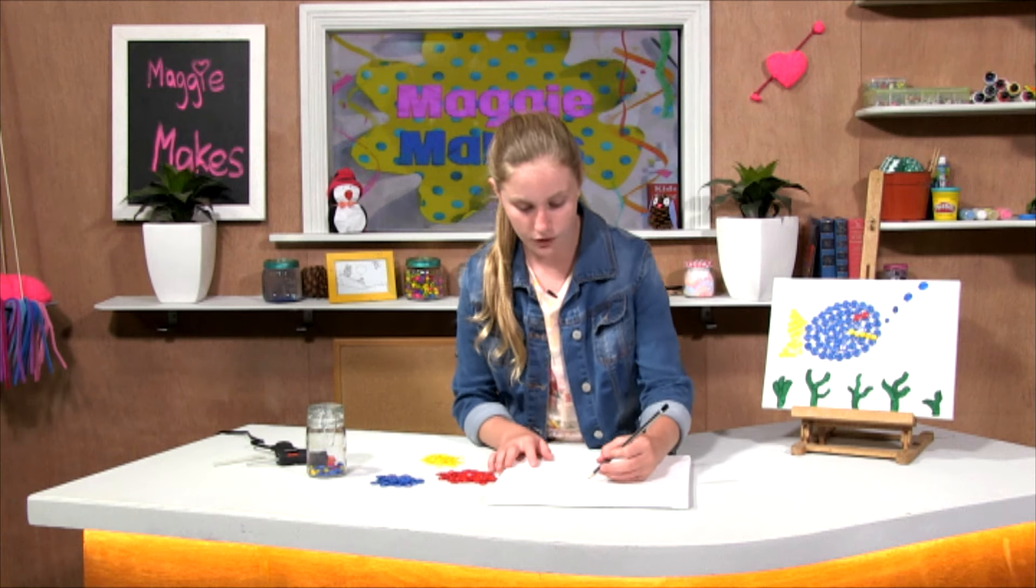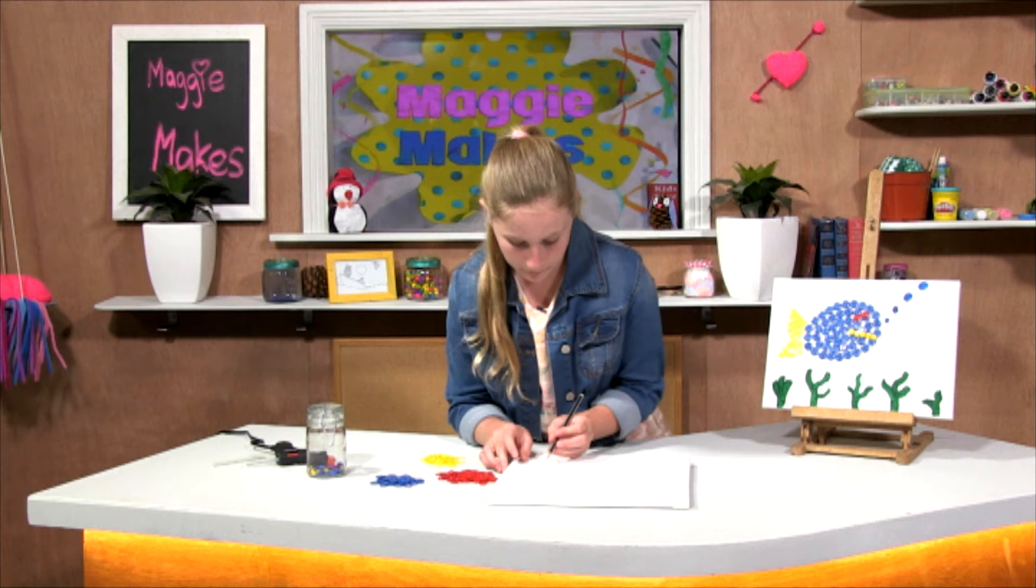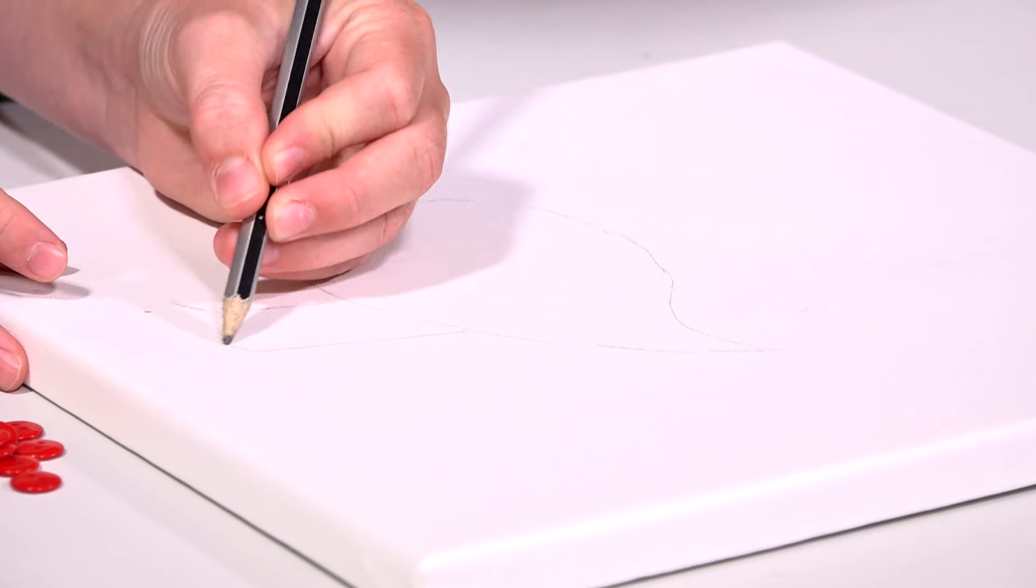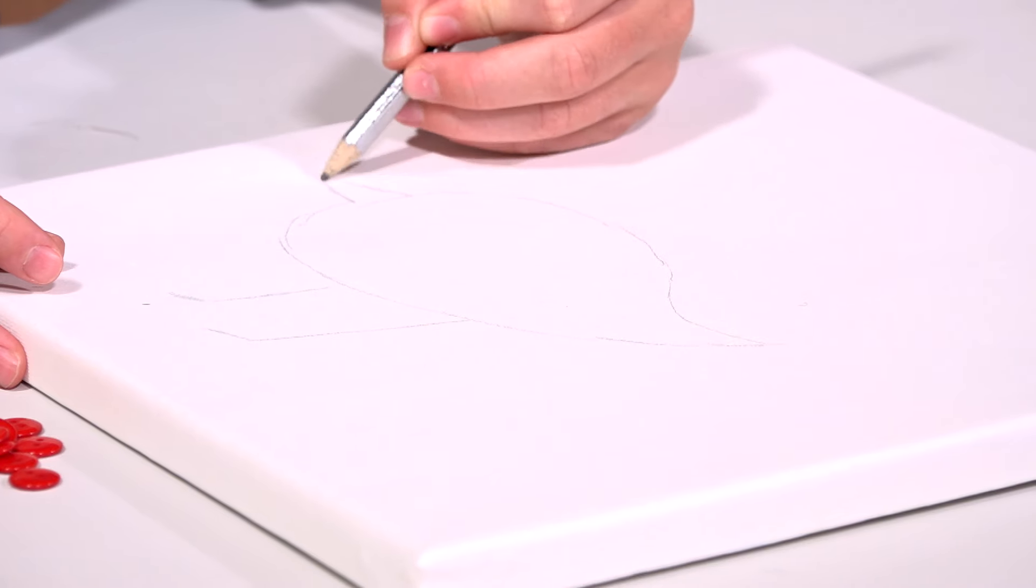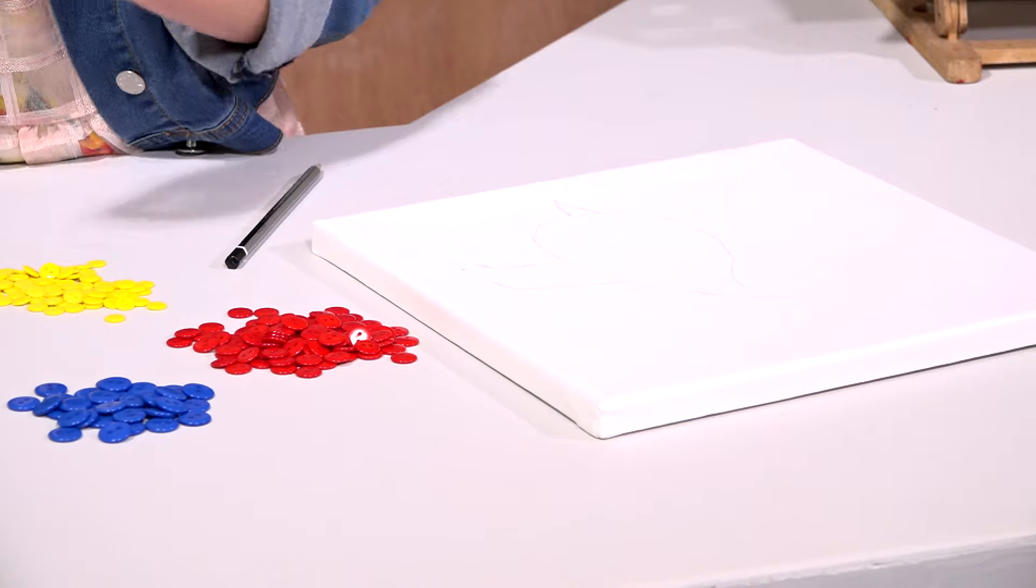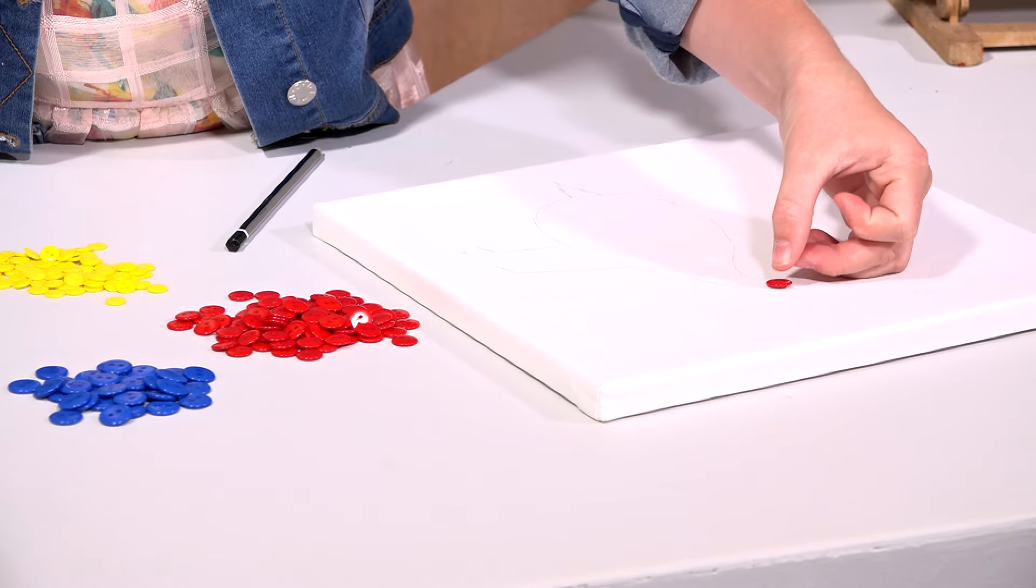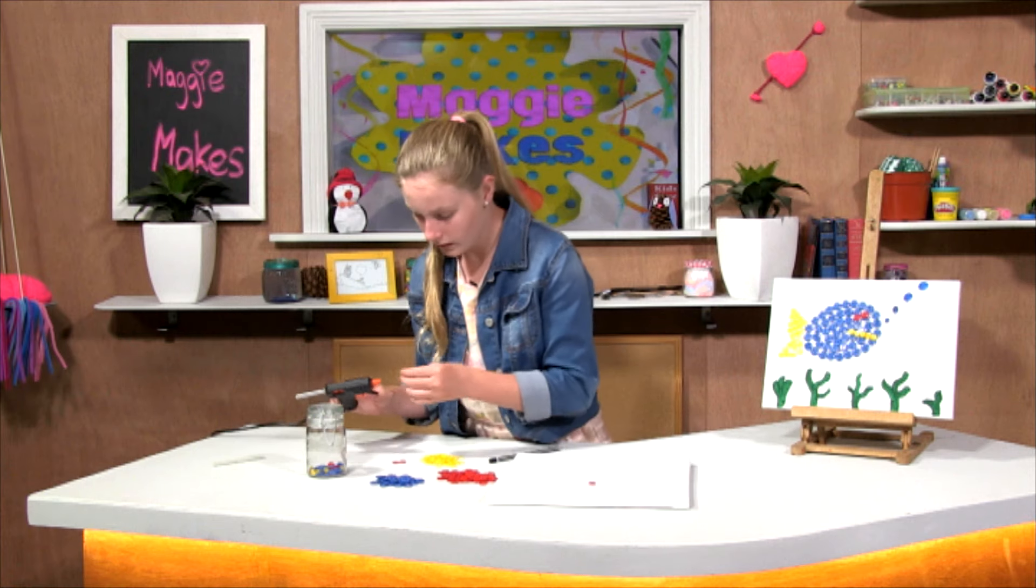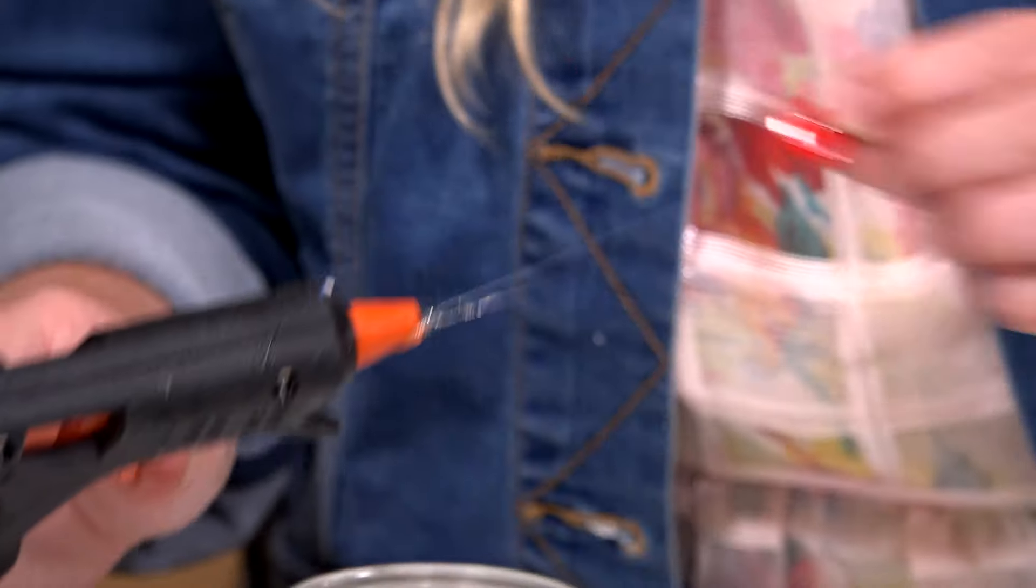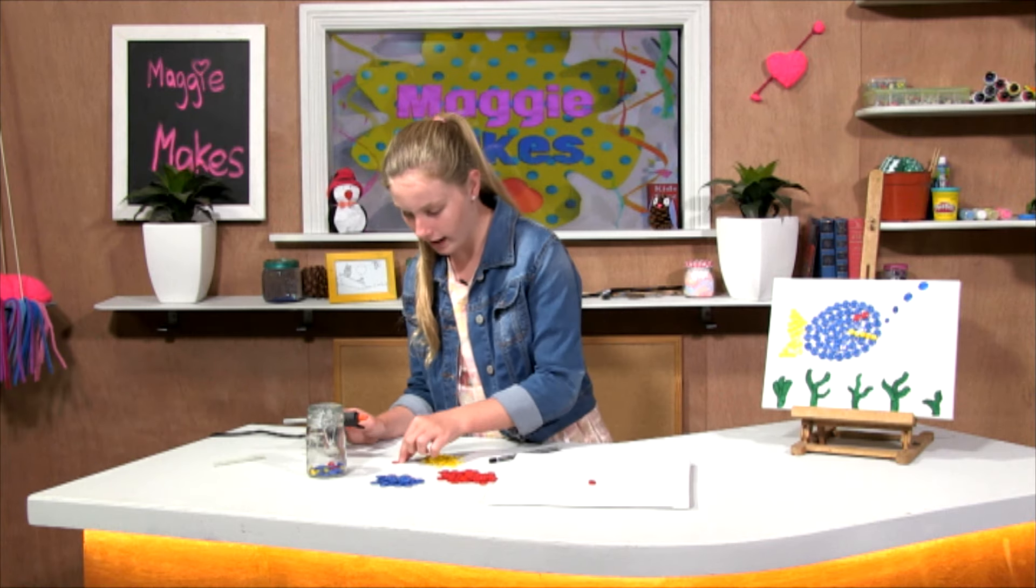Moving right along, we're going to draw your critter. I'm going to draw a little birdie. Now you can grab whatever colored buttons you want, grab a little bit of hot glue and hot glue it to the back, and then put it around your outline. You may just have some old buttons lying around.